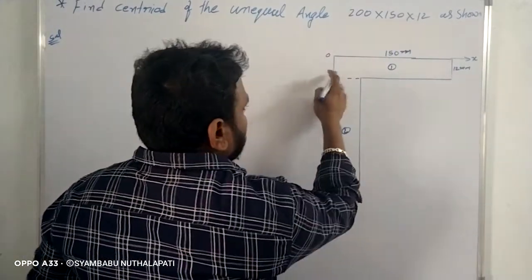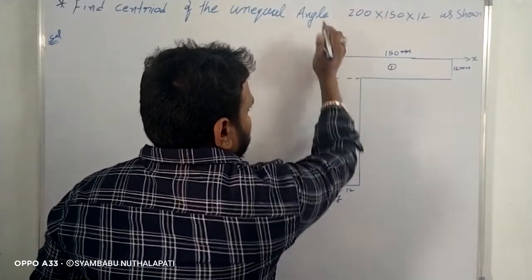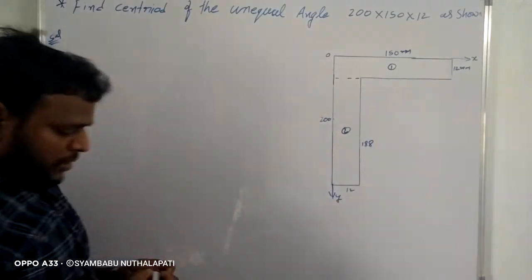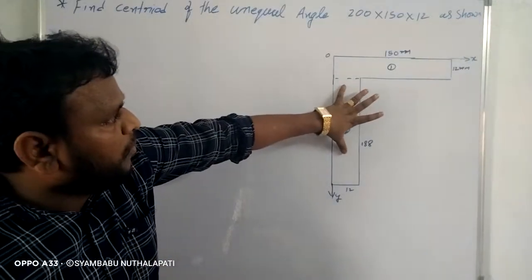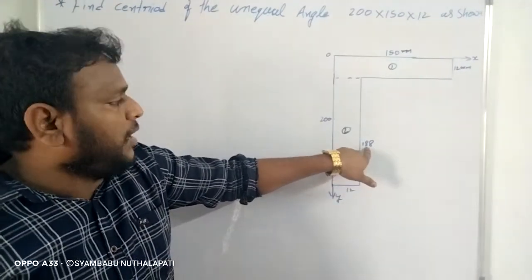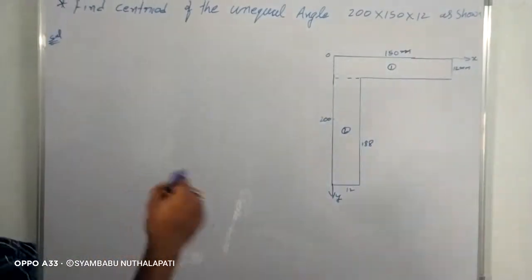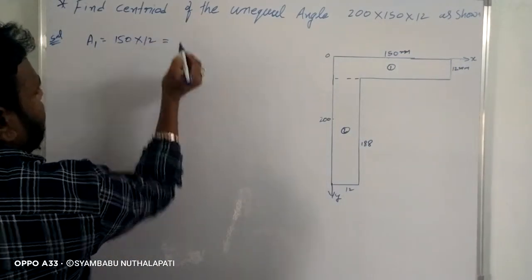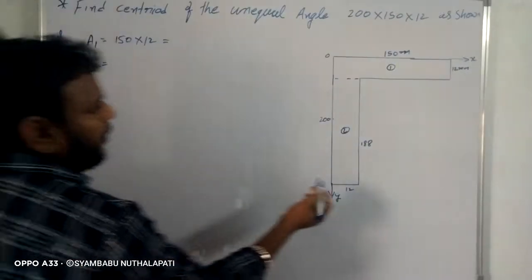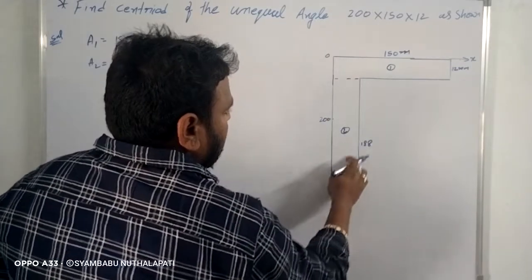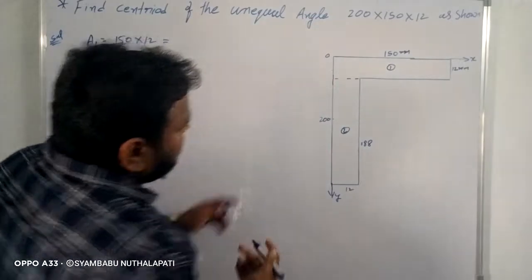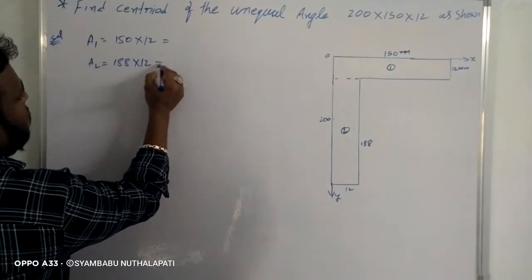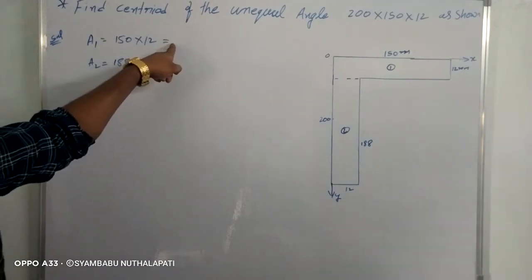This is 200 and 200. The remaining area is 1800. This area is 2256. The length is 200. The second component is 2256. The area A1 is equal to 1800.